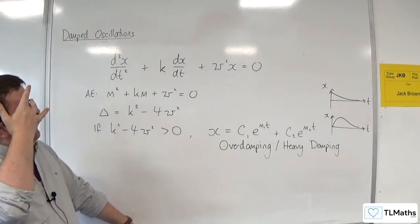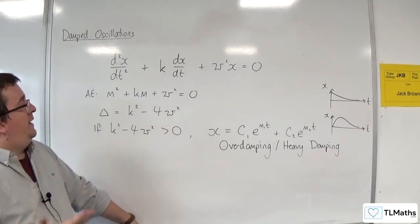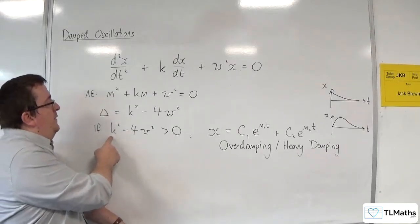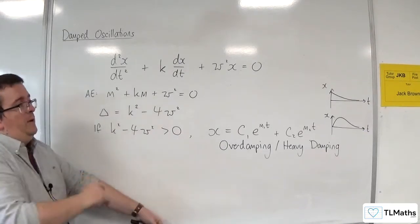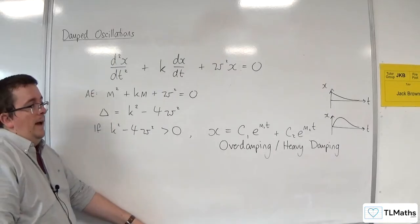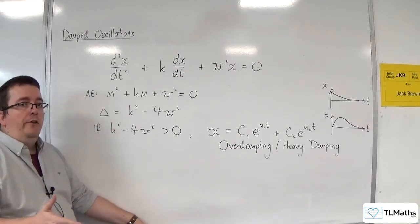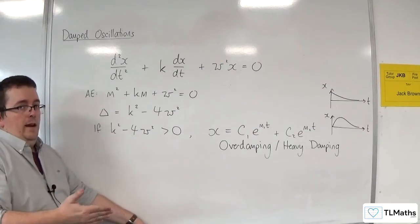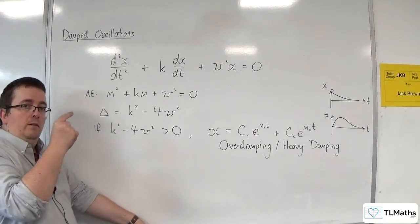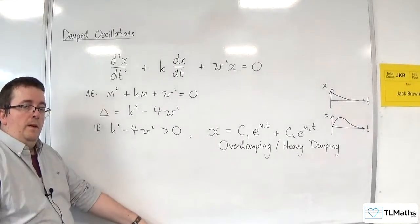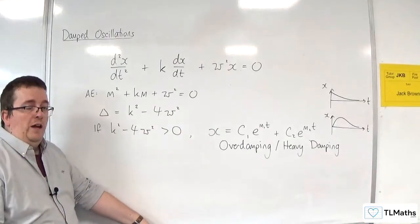So what happens is that if you increase k, then the more likely this is to be greater than zero. And what's going to happen is that once you've set your pendulum off, the quicker it's going to get back to just being back to its displacement being zero. In which case, it might not oscillate at all.